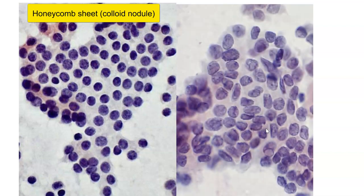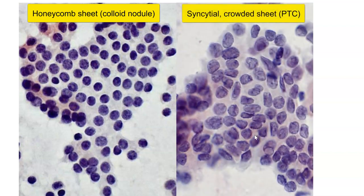In contrast, here is a syncytial sheet of cells taken at the same magnification from a case of papillary thyroid carcinoma, where the nuclei are much larger and more oval in shape. You can see very pale, powdery chromatin and also prominent nuclear grooves. So this is a nice classical example of papillary thyroid carcinoma. And over here, we can actually see an intranuclear pseudo-inclusion. Thank you.